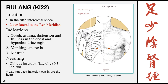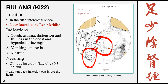Bulang, Kidney 22, is located in the 5th intercostal space, 2 cun lateral to the Ren meridian. Note the change from 0.5 cun to 2 cun lateral to the midline. Indications: cough, asthma, distension and fullness of the chest and hypochondriac regions, vomiting, anorexia, and mastitis. Needling: oblique insertion laterally 0.3 to 0.5 cun. Do not insert deep or perpendicular as this can injure the underlying organs.